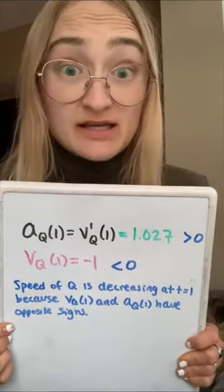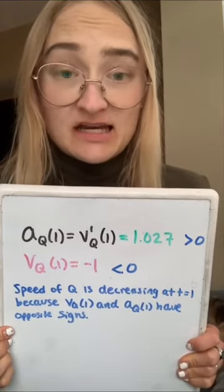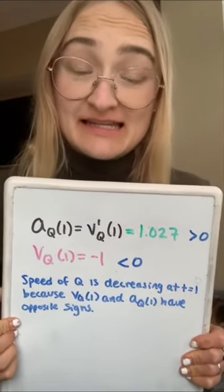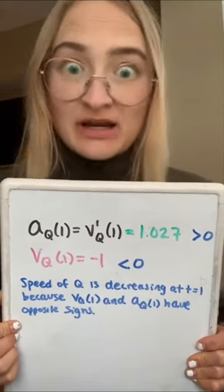The acceleration at time 1 is positive, and we already found that the velocity at time 1 is negative. Hence the particle speed is decreasing because the velocity and acceleration functions at time 1 have opposite signs.